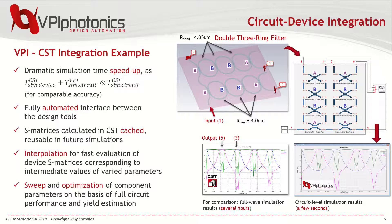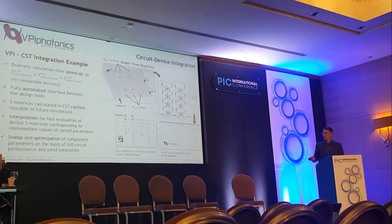Because this interface is automated, you can run multiple simulations very easily. For instance, it is possible to interpolate pre-calculated S-matrices such that for intermediate parameters — like the air-gap width between couplers — you don't have to rerun the FDTD simulation, but simply interpolate between pre-calculated S-matrices. This allows you to perform sweep optimization of component parameters and also perform yield estimation analysis.